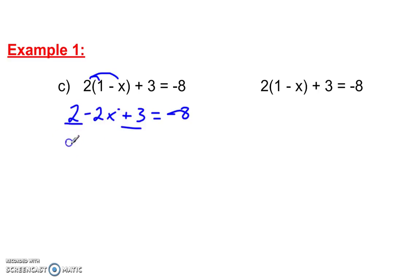2 and 3. So, negative 2x. We'll start with the variable term. Plus 5 is equal to negative 8. Circle the variable term, including its sign. Bring in the eliminator.